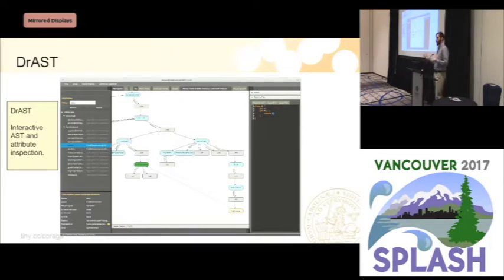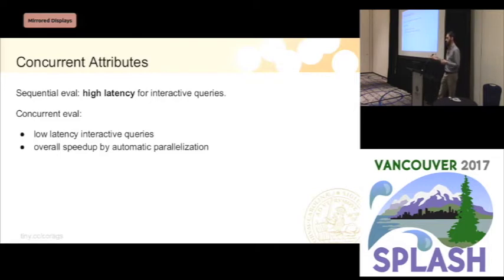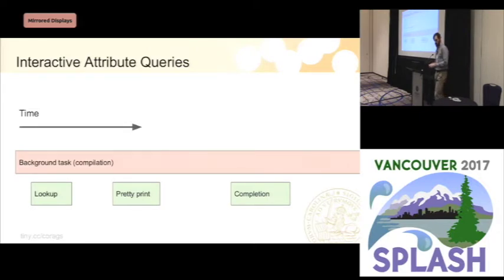Since this is an interactive tool, we want to handle interactive queries and compute them quickly. But you could imagine having a background thread running a compilation task that takes a long time. How can we provide low latency for these interactive queries? One way would be to have concurrent attributes — with concurrent evaluation, we could run the interactive query regardless of what other background tasks are running, such as doing completion and declaration lookup in an interactive thread. Concurrent evaluation could also enable speedup by parallelizing compilation.